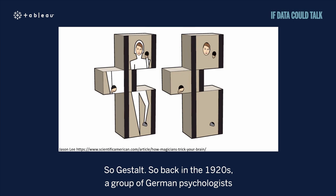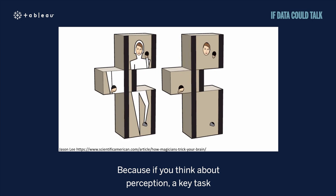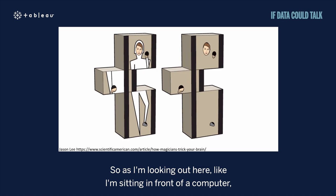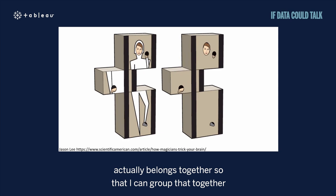The last principle we'll cover before the science of magic is Gestalt. Back in the 1920s, a group of German psychologists became interested in how the visual brain groups information together. A key task of perception is working out which objects belong together — as I look at my computer screen, my brain receives vast amounts of visual data and must work out which pieces actually belong together.